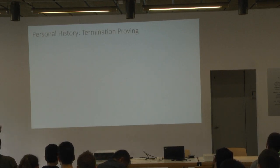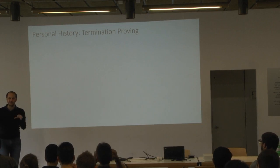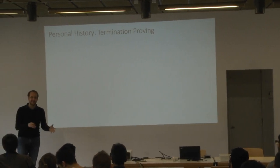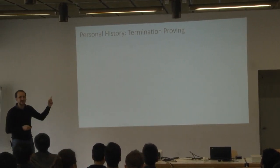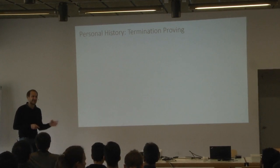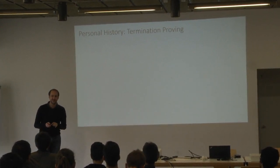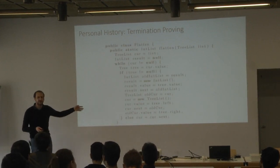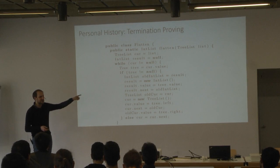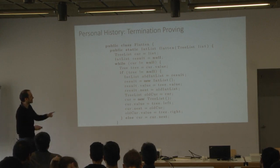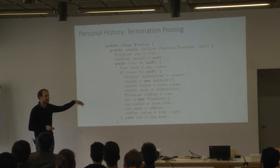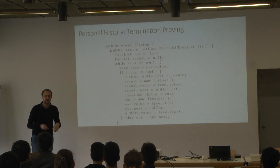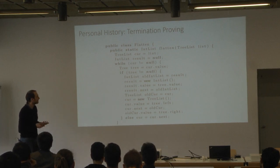Maybe to explain how I ended up here: I feel like I'm part of this community, but practically I'm a machine learning researcher nowadays. My PhD is on termination proving — I started on termination proving on term rewrite systems, which is about as far away from practical things as you can be. Then we started doing Java, and I'm showing leading examples from my papers during my PhD. From my first paper, we could prove termination of a flatten function in Java, which was really just a Java implementation of flattening a tree into a list.